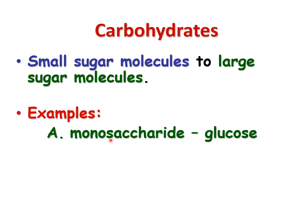Here's our simple sugar — this is glucose, very common, though not the only simple sugar. Another word for simple sugar is monosaccharide — saccharide being the subunit or monomer. So it's one monomer: glucose.